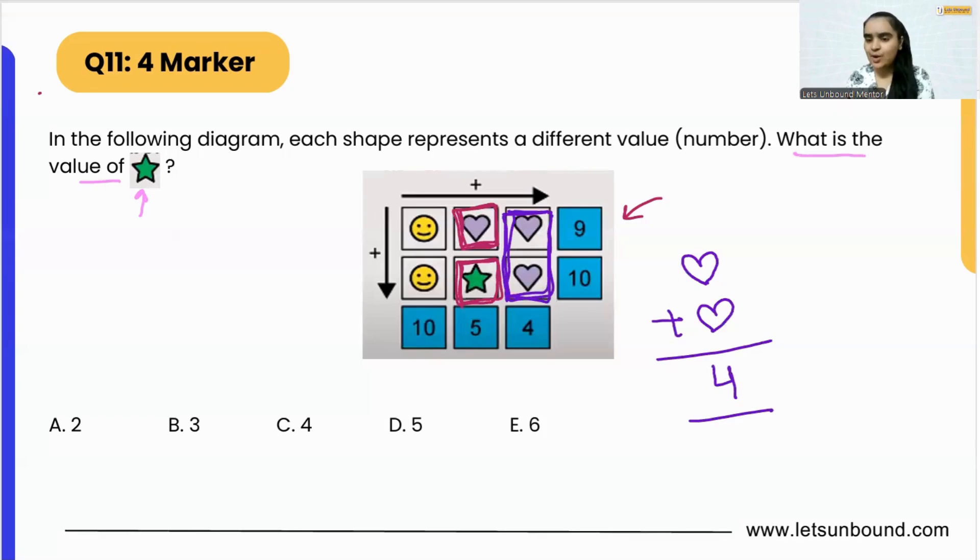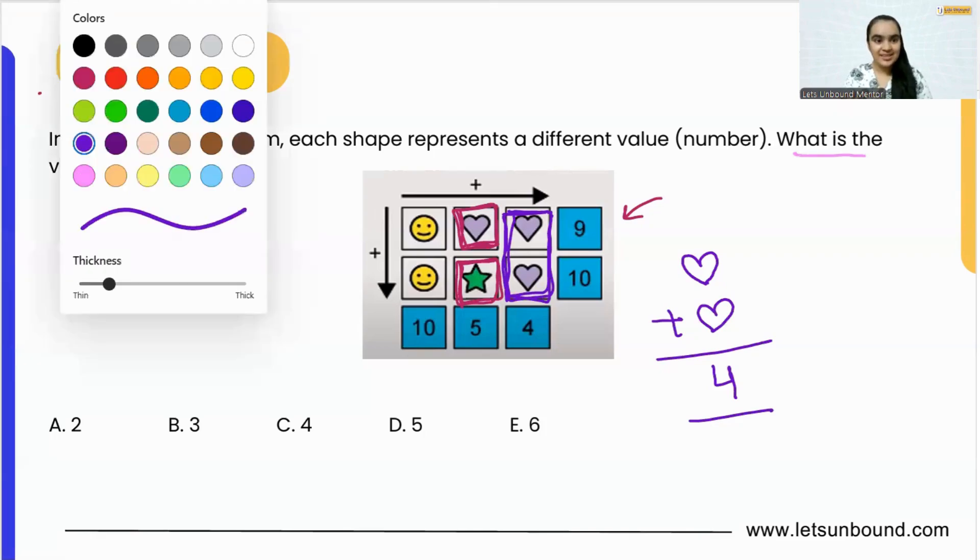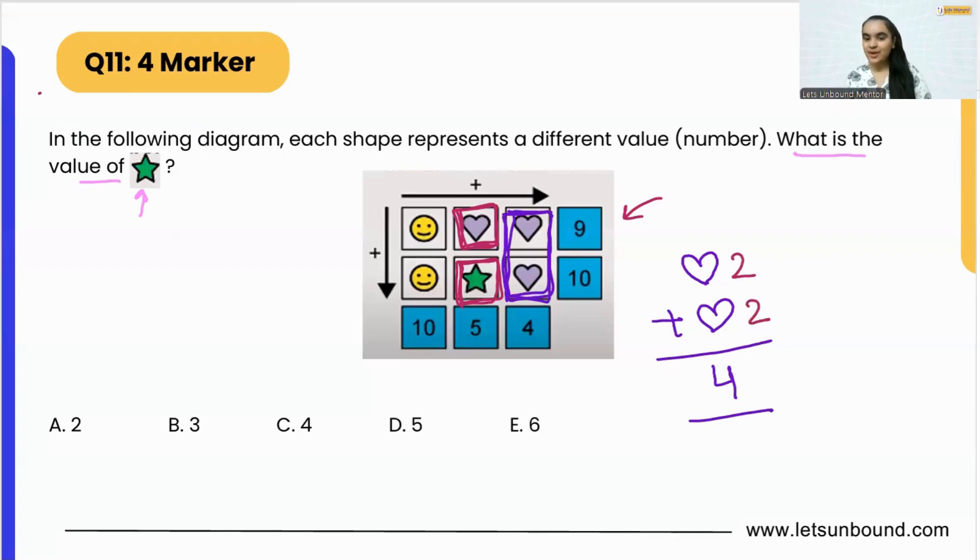So can you tell me, how can I split four into two parts, but both the numbers should be same? You are correct! Two plus two is four. That means the value of this heart is two.